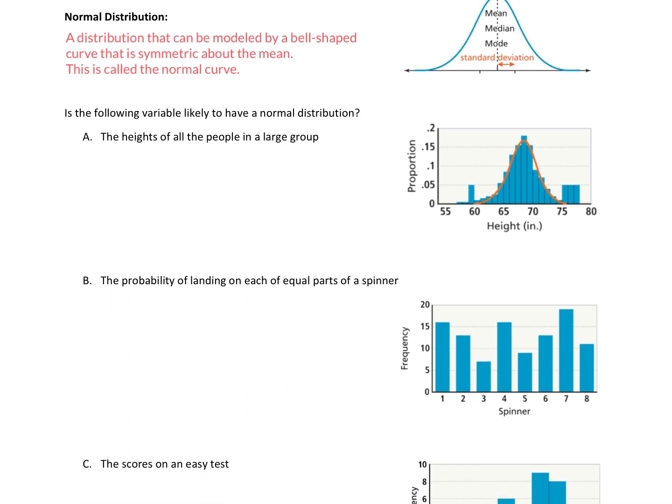All right, so part A: the heights of all people in a large group. What's helpful is to see the histogram of that. So here's the histogram of the distribution. It lets us see the shape of the graph. And yeah, look at that. This is, for the most part, a bell-shaped curve, pretty symmetrical about the middle right there.